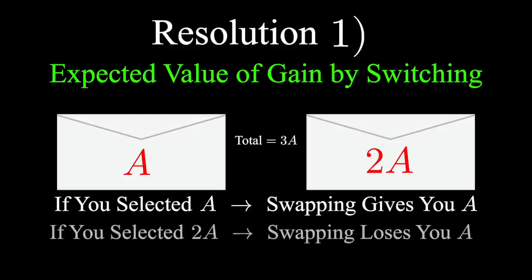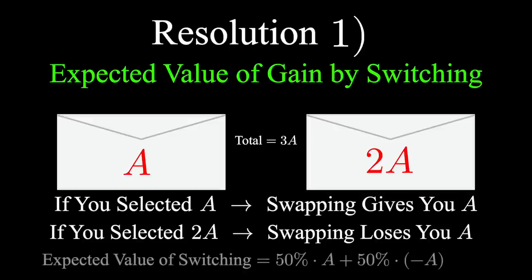If you selected the envelope with 2a first, you lose the amount a by swapping. You're trading 2a for a, so you've lost the amount a. On average, half the time you gain a, half the time you lose a. Adding these together gives us zero, the intuitive value of switching envelopes.